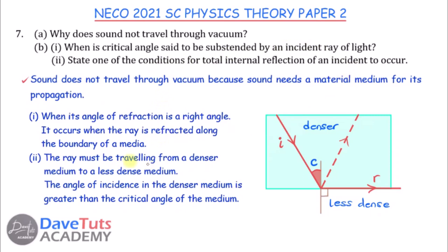The critical angle is subtended by an incident ray of light when the ray is reflected along the boundary of the media. For total internal reflection to occur, there are two conditions: first, the ray must travel from a denser medium to a less dense medium; second, the angle of incidence in the denser medium must be greater than the critical angle of that medium.